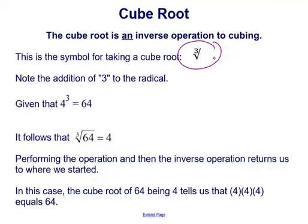Given that, going back to our example of 4 cubed equals 64, it follows that the cube root of 64 equals 4. Performing the operation and then the inverse operation returns us to where we started. In this case, the cube root of 64 being 4 tells us that 4 multiplied by itself three times equals 64.